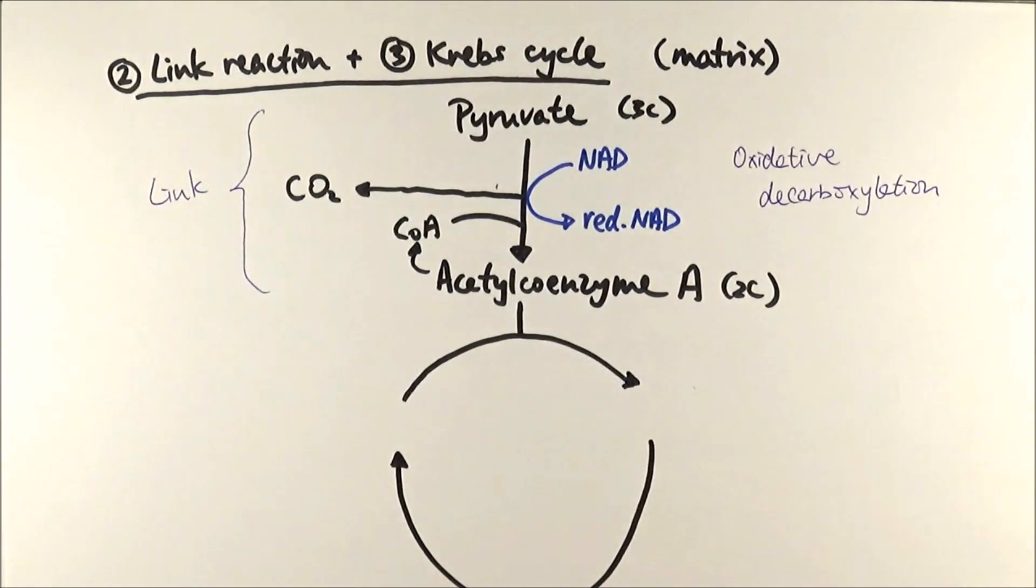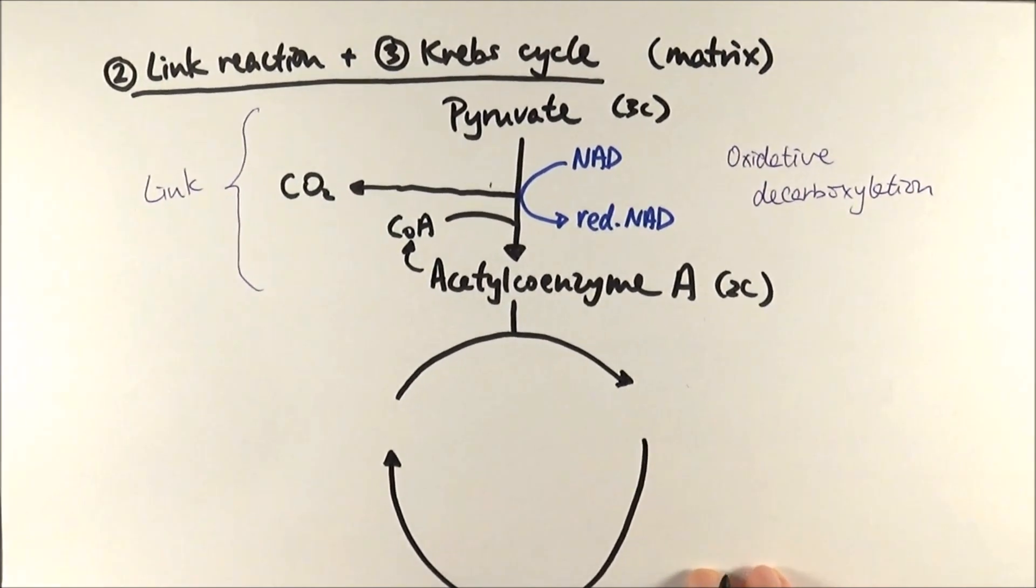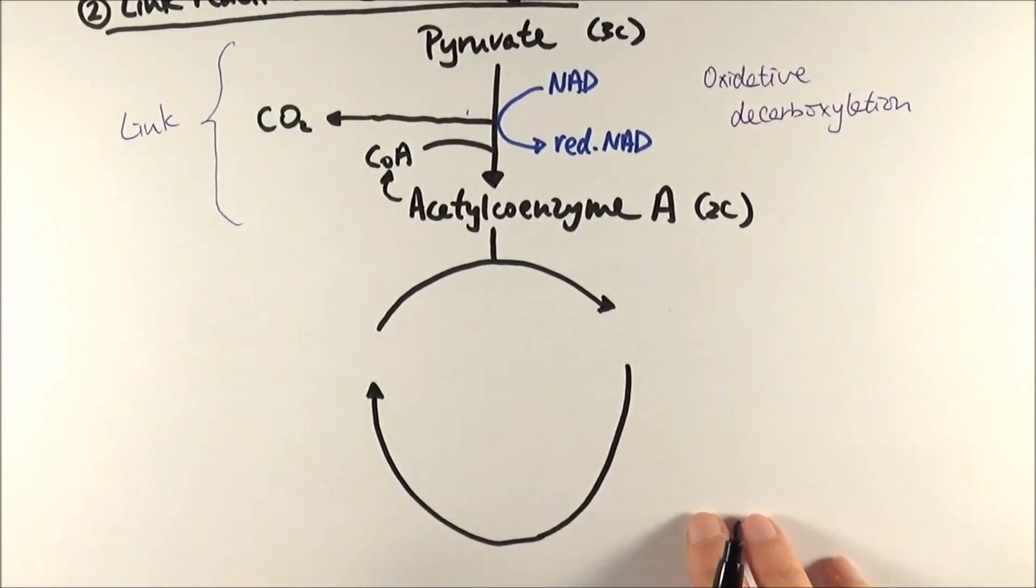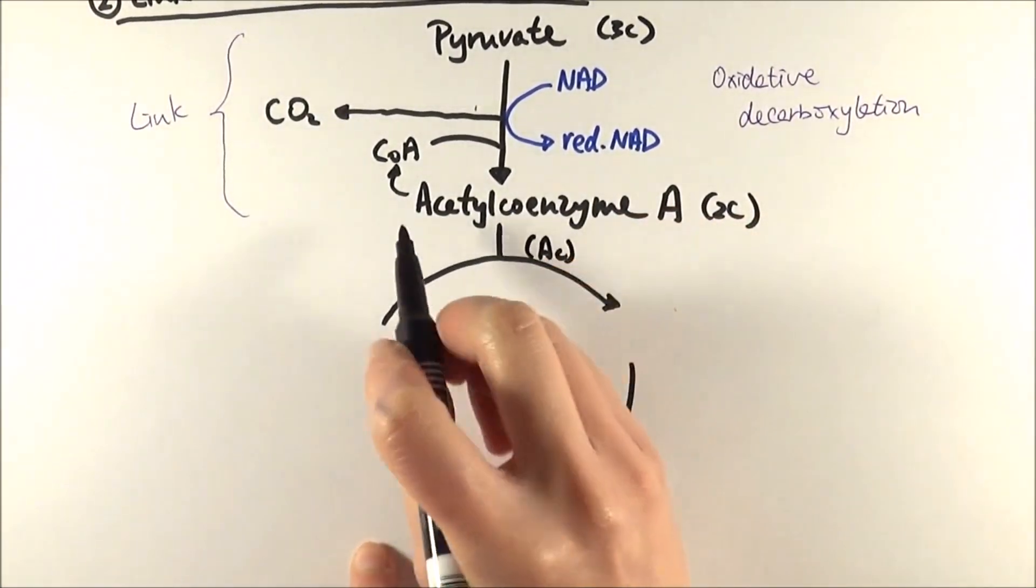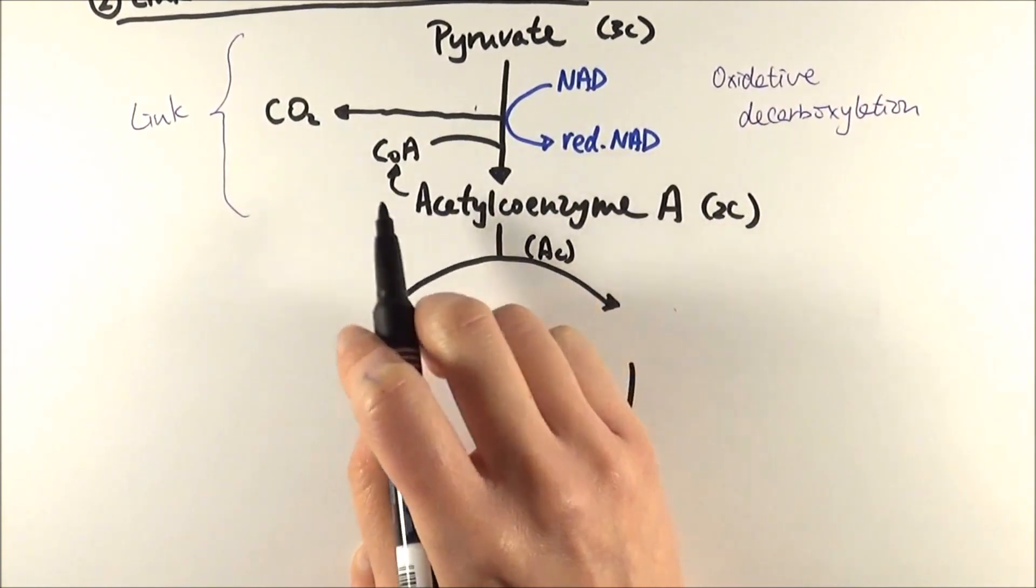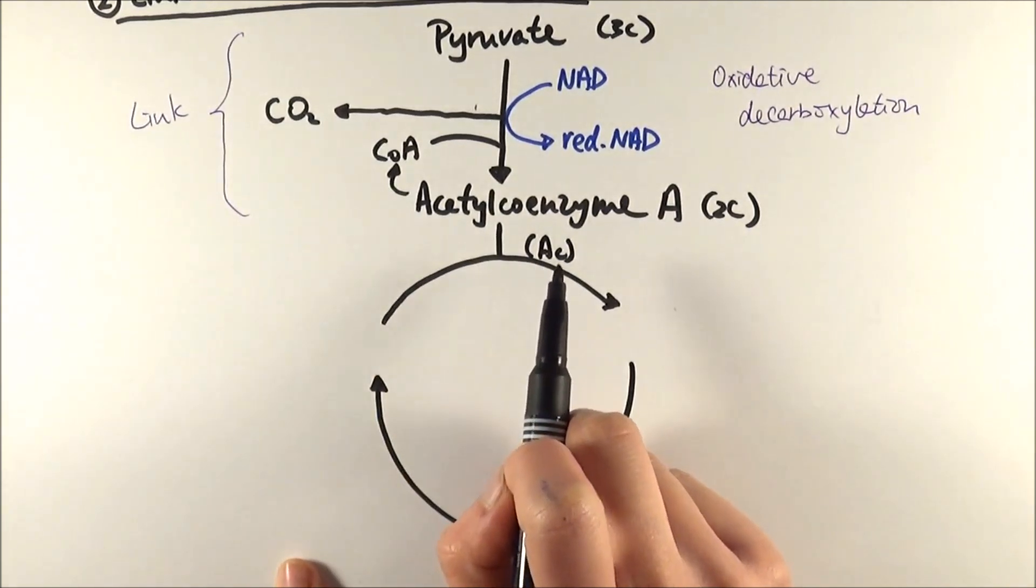Here what you have is acetyl coenzyme A breaks down to release the acetyl group, and that goes into the cycle here. The coenzyme A is then recycled to receive another acetyl group.